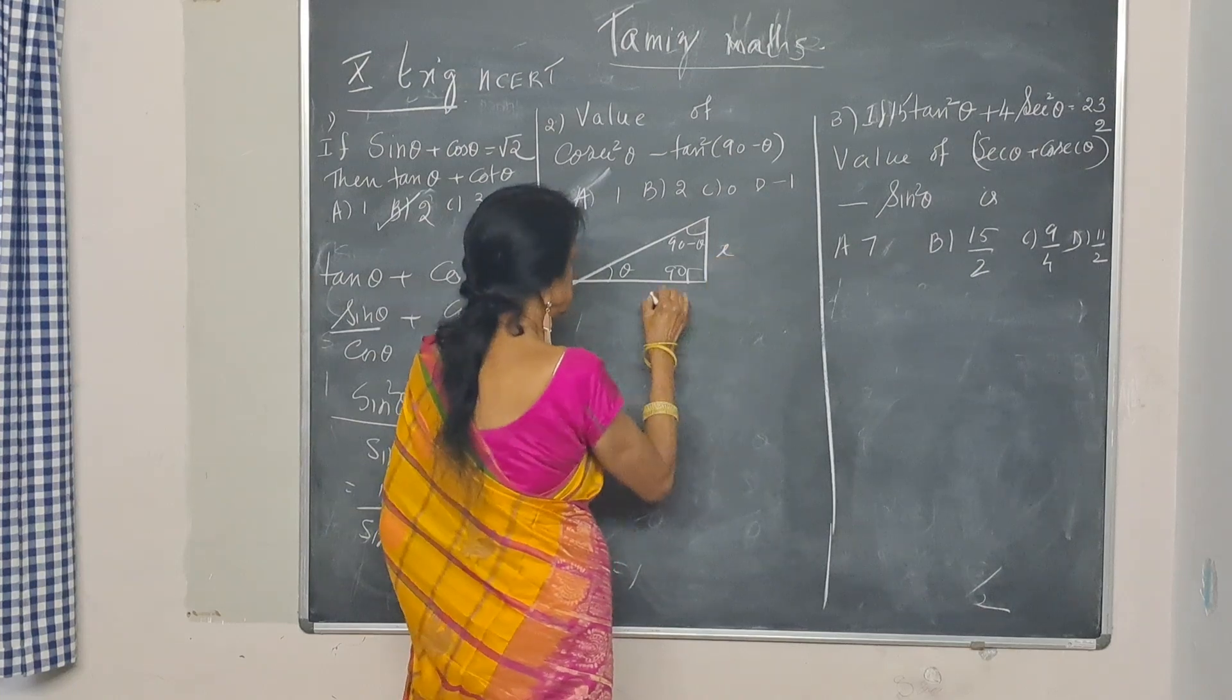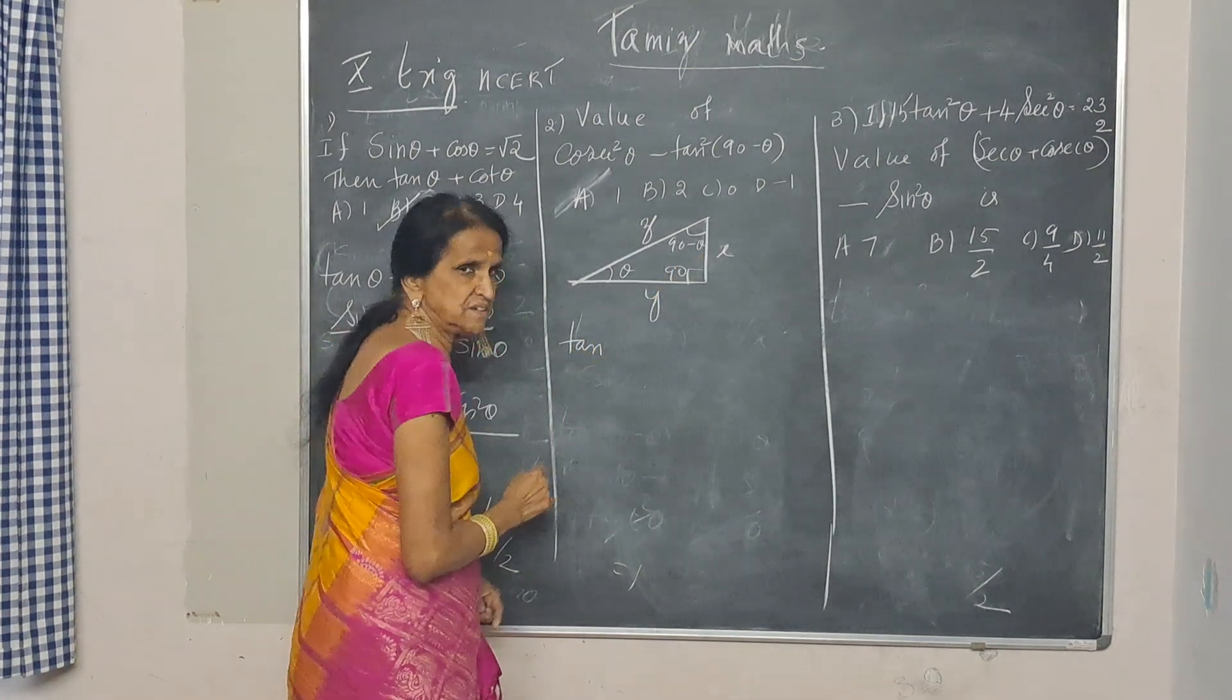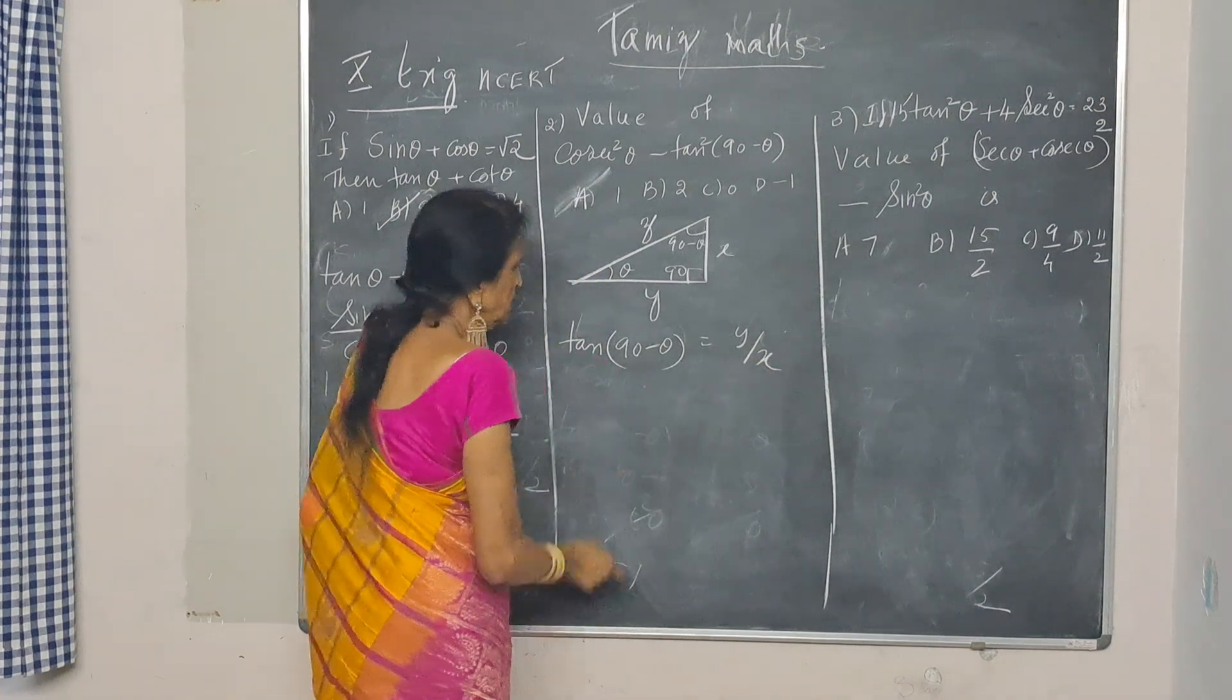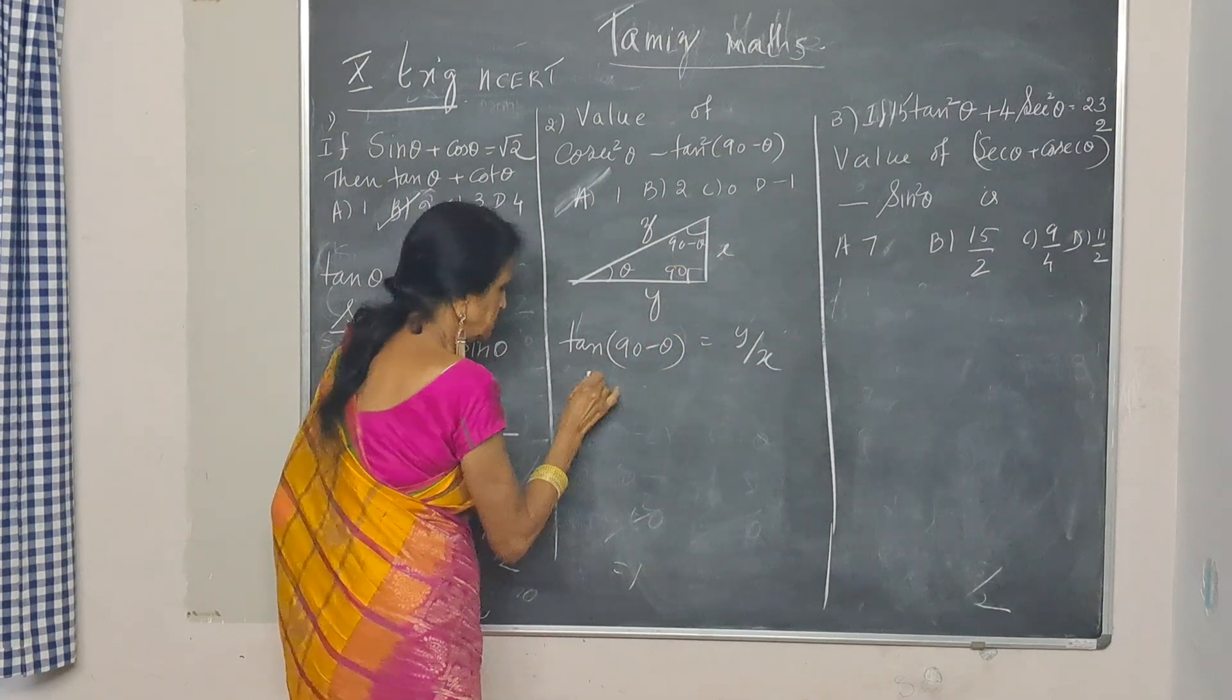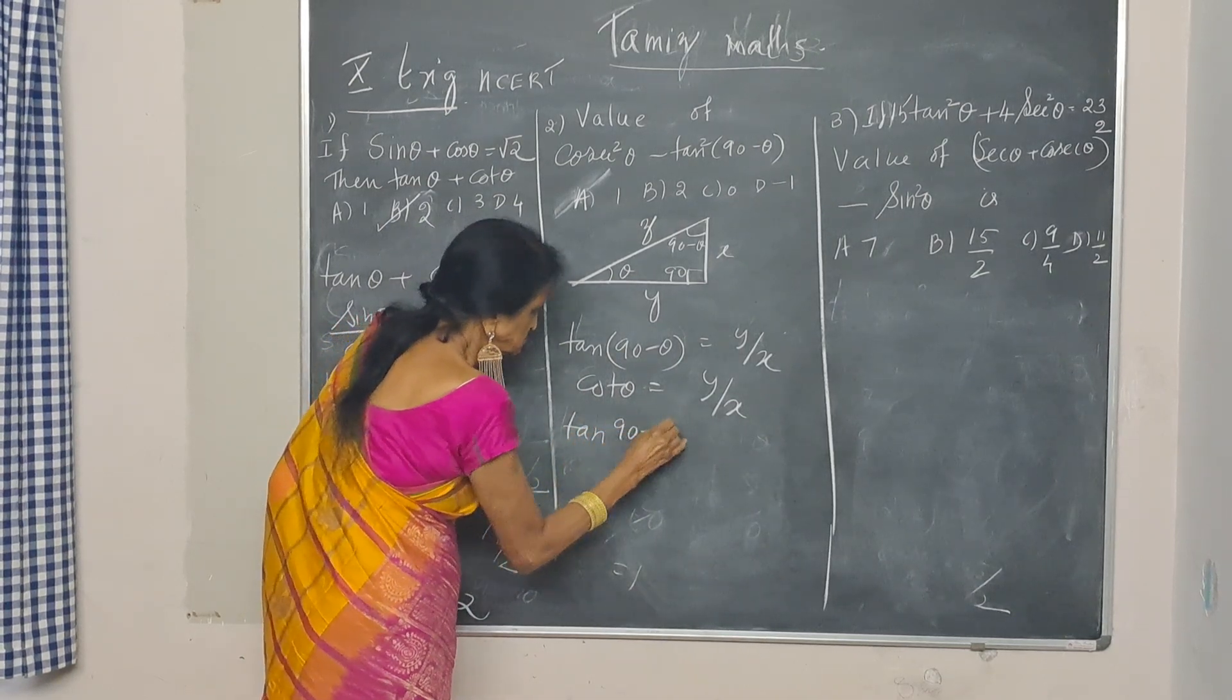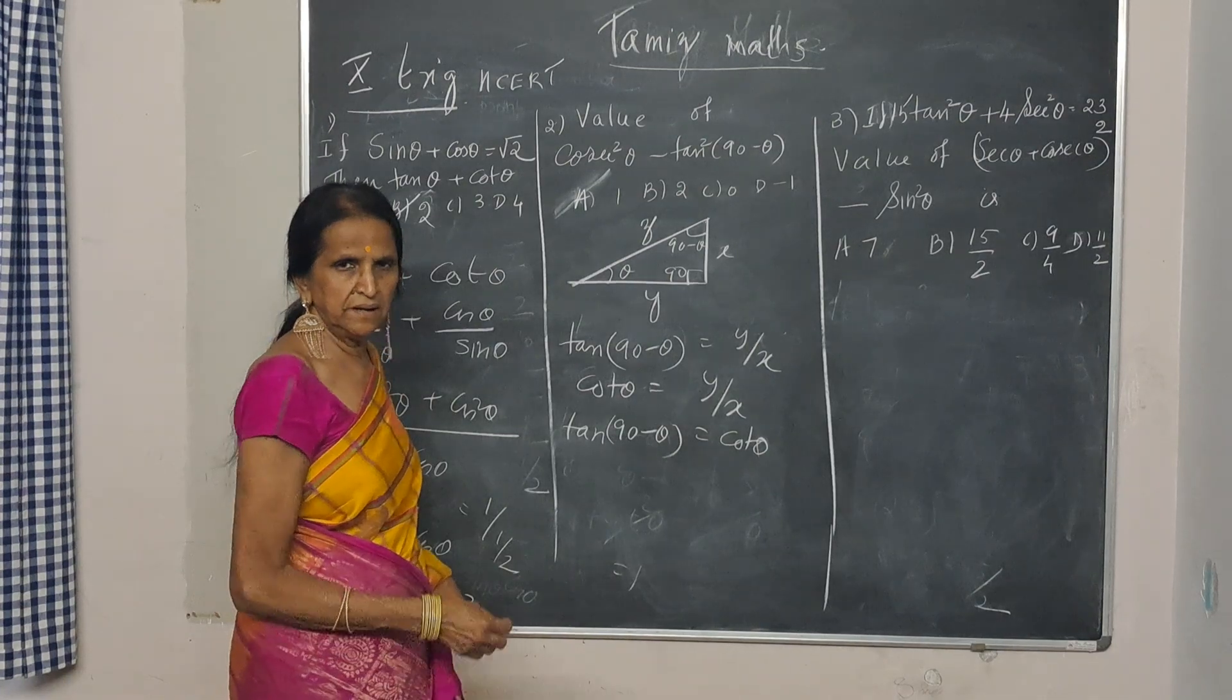Let's just say this is X, this is Y and this is Z. What is tan? Opposite by adjacent. Tan 90 minus theta is equal to Y by X. What is cot theta? Adjacent by opposite. So, tan 90 minus theta is equal to cot theta. Like that, you can try what will be sin 90 minus theta. I leave to the viewers to try.